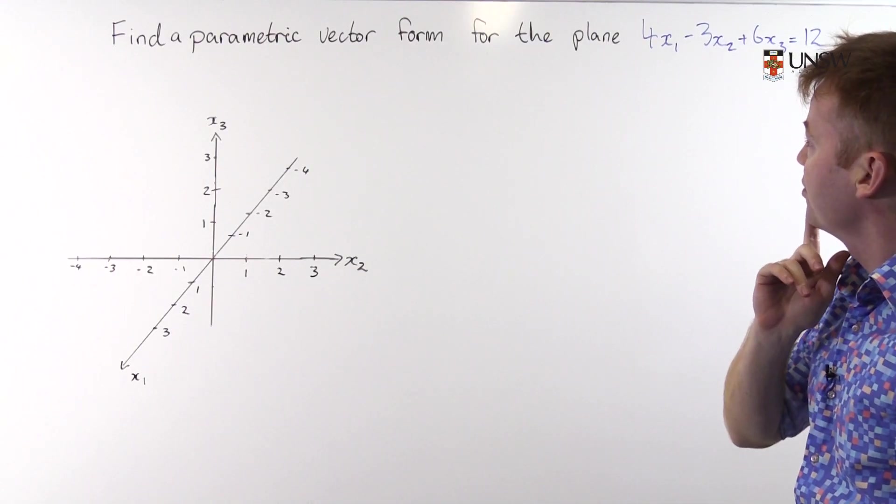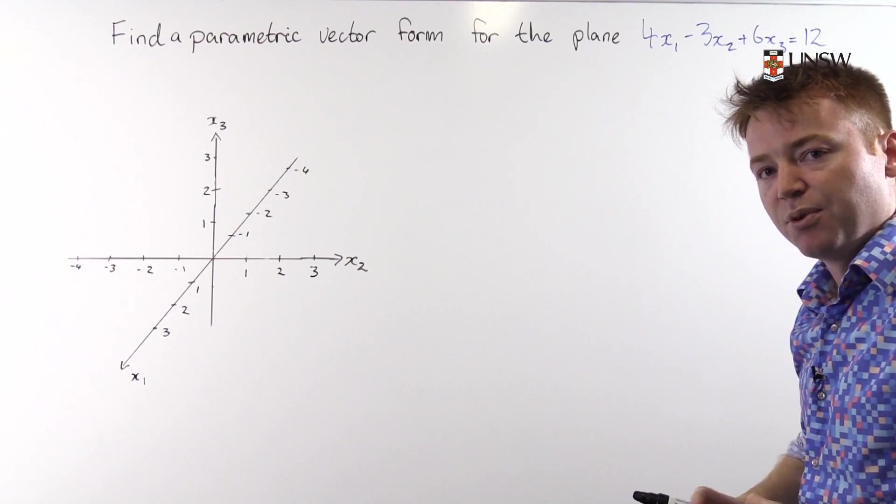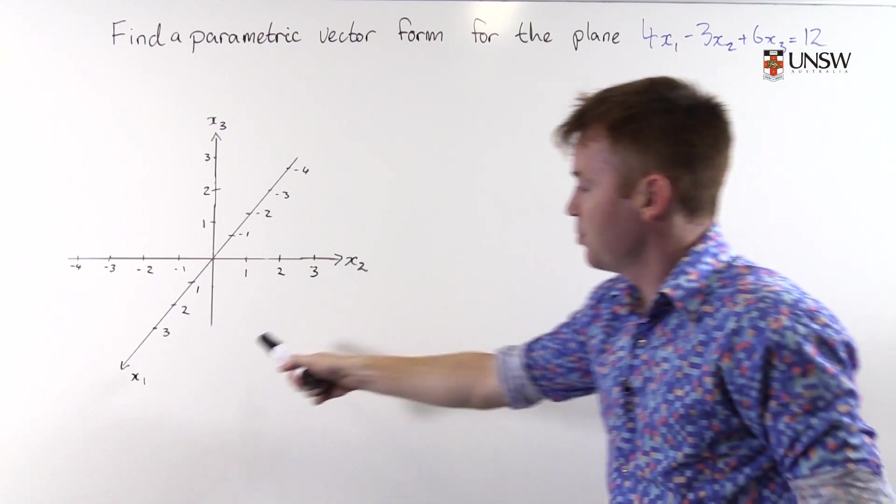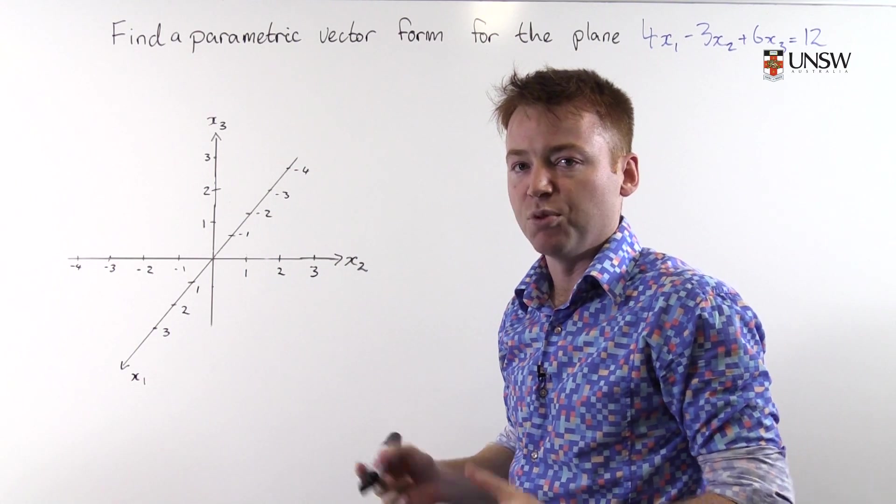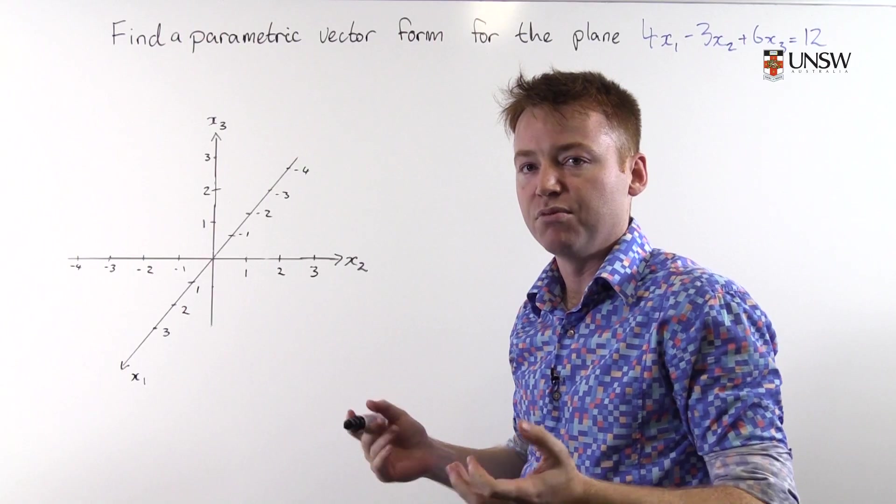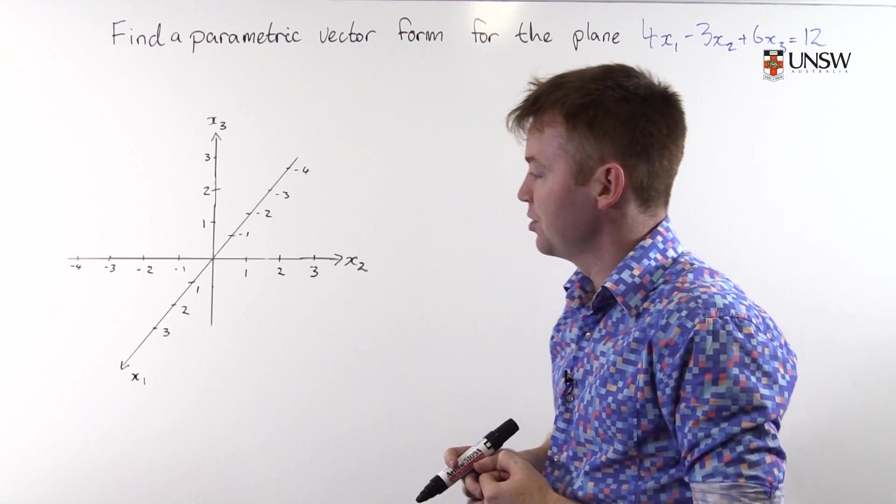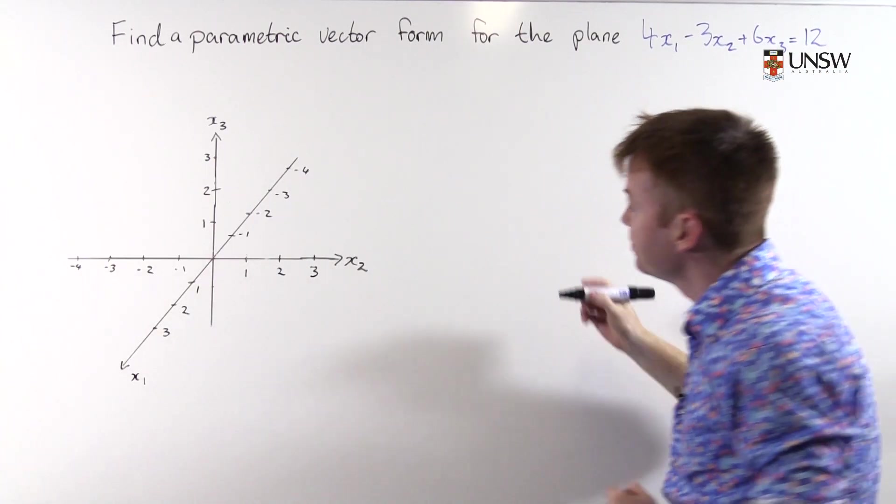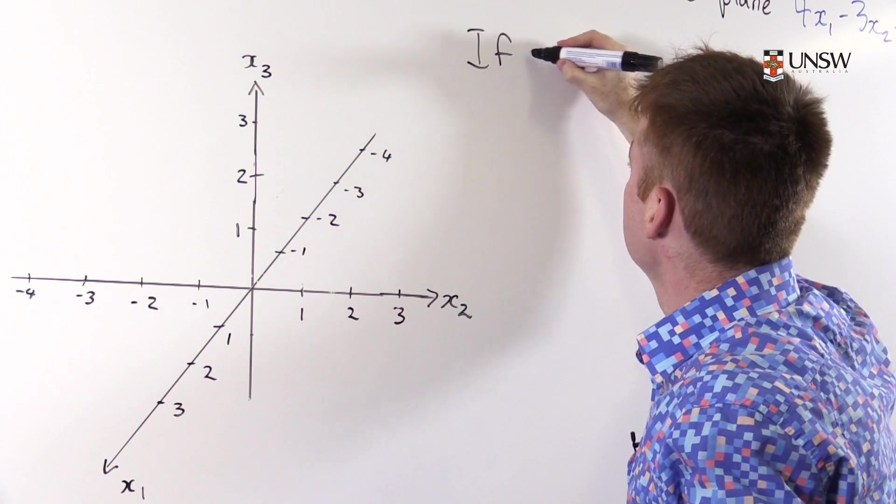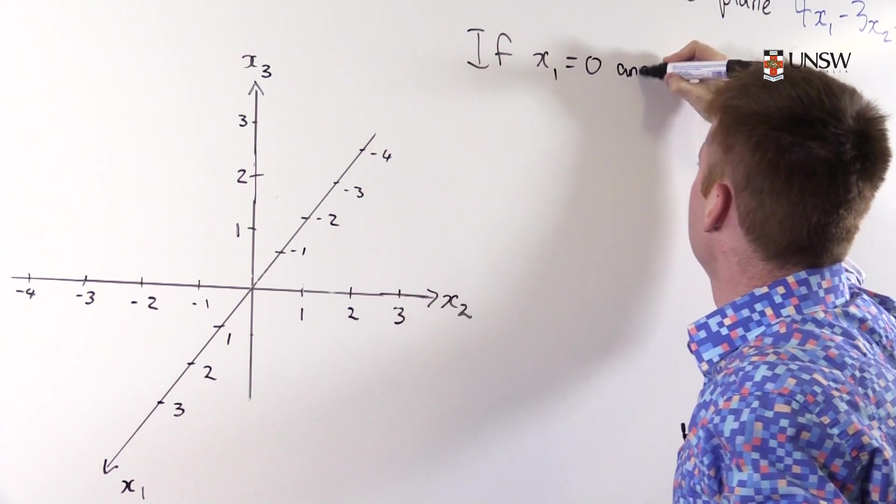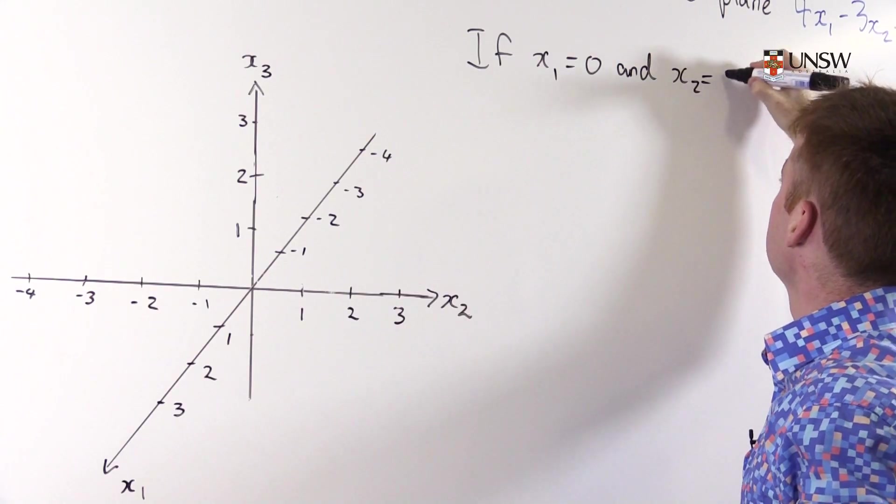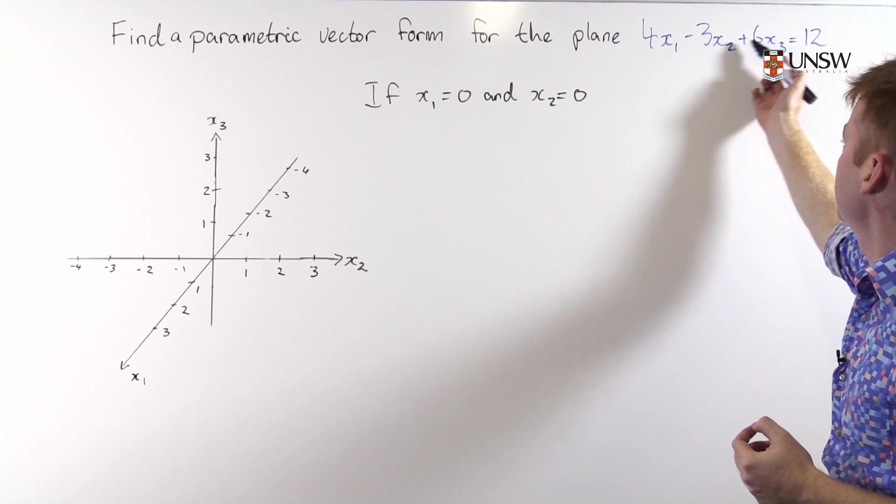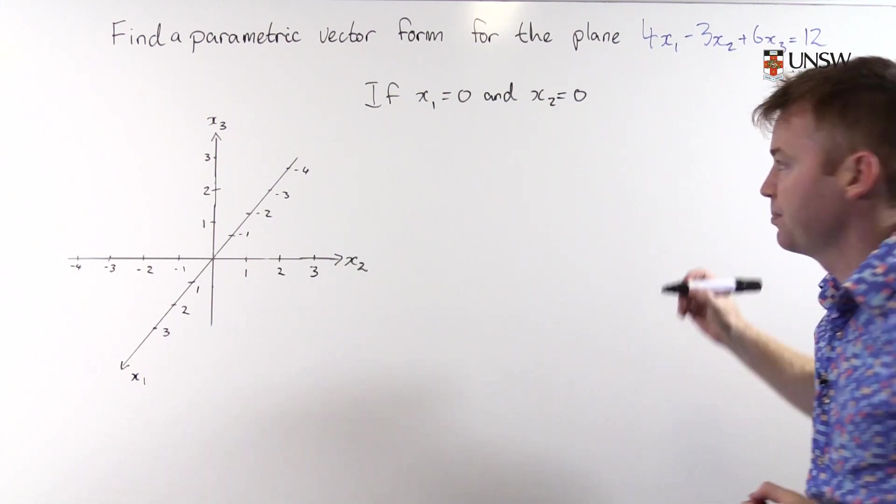Find a parametric vector form for this plane. The first way we need three points. The easiest three points are the ones on the x₁, x₂ and x₃ axes. So we'll find these points in much the same way as you would find them on a two dimensional plane in high school. We'll set x₁ and x₂ to be equal to 0 and find the x₃ component. If x₁ = 0 and x₂ = 0 then what must x₃ be? Well, if that bit's 0 and that bit's 0 then 6x₃ is 12 so x₃ must be 2.